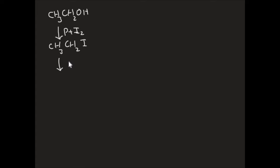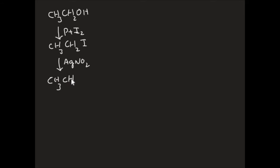When ethyl iodide reacts with silver nitrite, we will get a nitro compound — CH₃CH₂NO₂. Then we treat that with nitrous acid, obtained from NaNO₂ and HCl. The compound formed in this step is called nitrolic acid — CH₃C(=NOH)(NO₂). In this step, once we treat the salt of nitrolic acid with sodium hydroxide, we will get red coloration. So red coloration will come after treatment with sodium hydroxide. This is the series of reactions for ethyl alcohol.